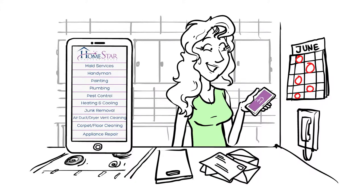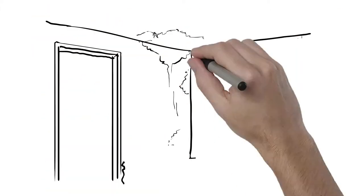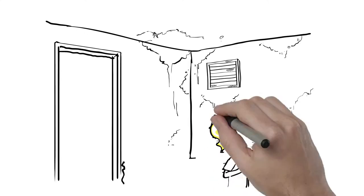Homestar Pro is the mobile, on-demand, professional alternative to doing it yourself. Need someone to repair the drywall, install a ceiling fan and paint that room?